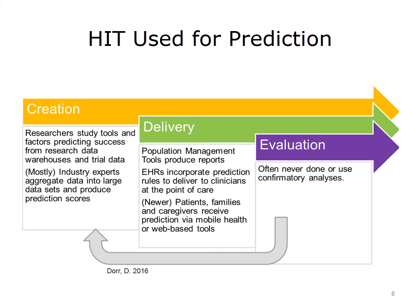HIT is used for prediction in three ways—creation, delivery, and evaluation. Researchers and people in industry often create algorithms that risk-stratify or predict outcomes. Researchers study a condition or group of patients, analyze their data, and propose a risk score. Industry also analyzes data, but they use it for the benefit of program planning. The word industry, in this situation, is loosely defined as large health plans, health product companies, and data-oriented companies that work with healthcare, such as Siemens or Optum.